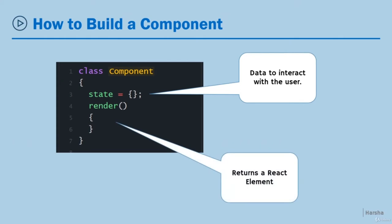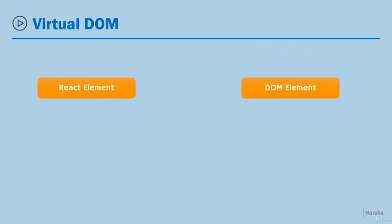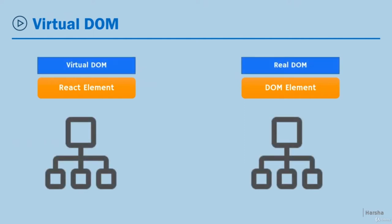The component also contains a method called the render method. This method tells React how the state should be rendered to the user. The render method returns a React element containing actual HTML tags defining how the data should be rendered. A React element is a simple JavaScript object that represents a piece of UI, much like a DOM element in JavaScript. The difference is that a React element is called the virtual DOM, while the actual DOM element is the real DOM. The virtual DOM is a dummy representation of the real browser DOM.